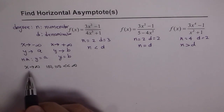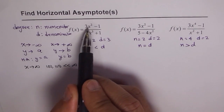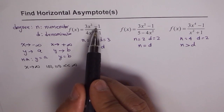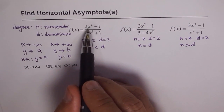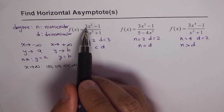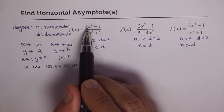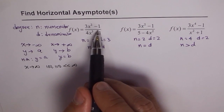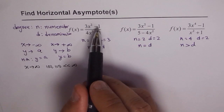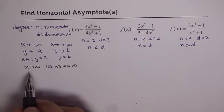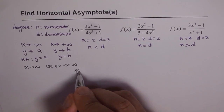When x approaches infinity, this equation can be written as just 3x squared, because 3x squared is way larger than minus 1. Imagine x is 1000 — 3x squared will be 3 million, which is so large compared to 1 that you can forget about 1. So the other term becomes negligible. When x approaches infinity, we can approximately rewrite our equation as f(x) ≈ 3x squared.